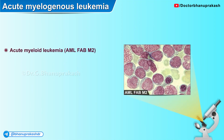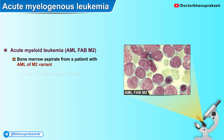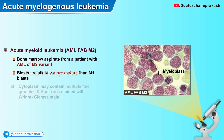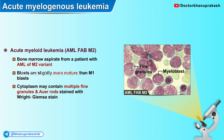Here is another histopathological image of acute myeloid leukemia from the bone marrow aspirate of a patient with AML of the variant M2, diagnosed with the help of flow cytometry. The blasts here are slightly more mature than the M1 type of blasts. The cytoplasm may contain multiple fine granules, and there are also Auer rods which can be seen in this cell. These were stained with Wright-Giemsa stain.